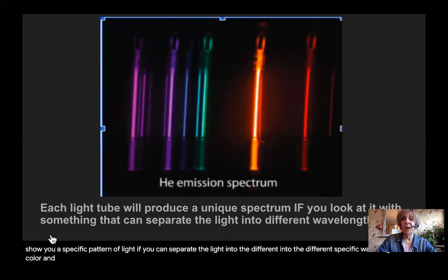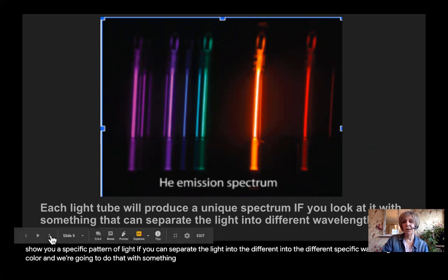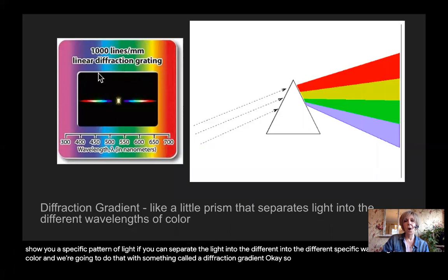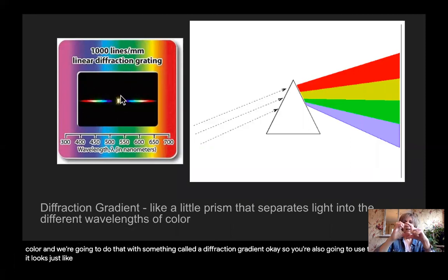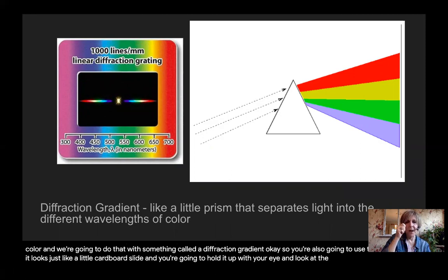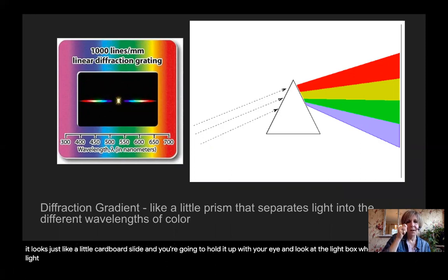And we're going to do that with something called a diffraction gradient. So you're also going to use this in the lab and it looks just like a little cardboard slide. And you're going to hold it up to your eye and look at the light box when you turn the light box on.